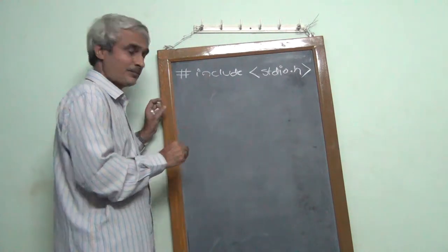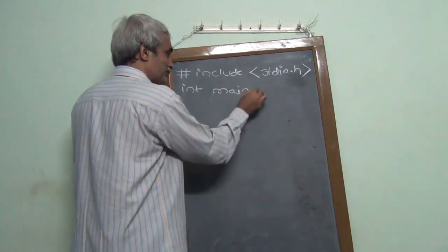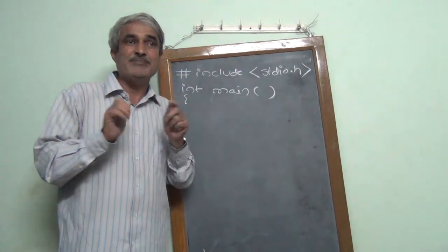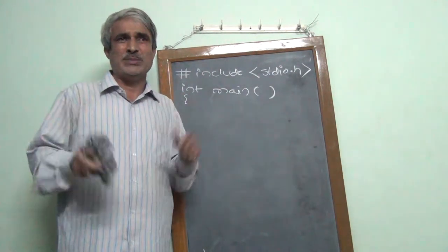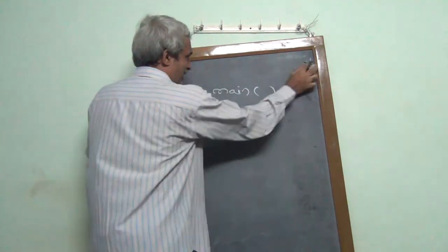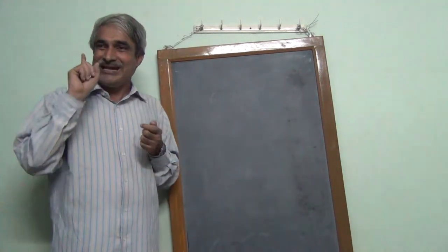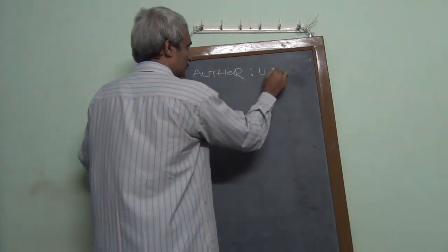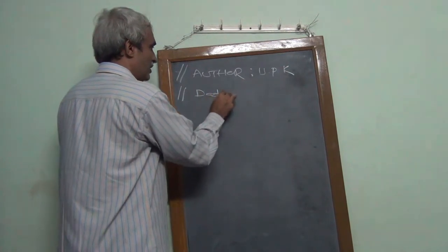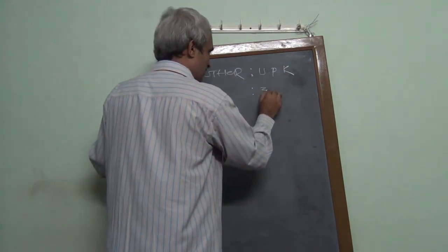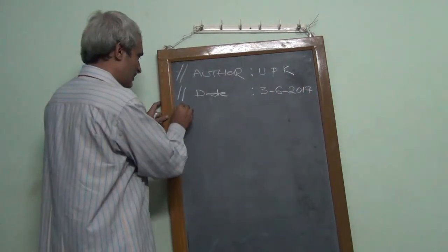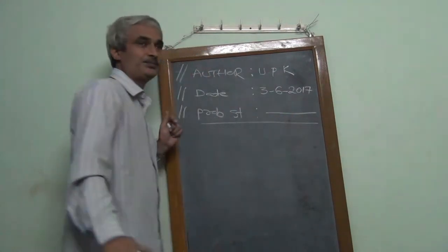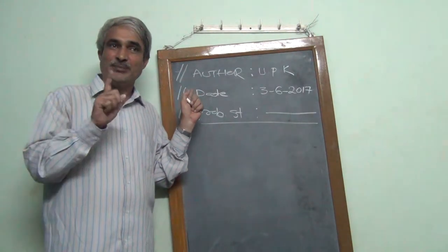We are on the second day, second program. Some details we may not know yet, but we go ahead. The first line is: hash include stdio.h. This is a header file — it acts as a library for input-output related functions. Before writing hash include, you must write comments at the beginning of every program: who is the author, the date — 3rd June 2017 — and a short problem statement.